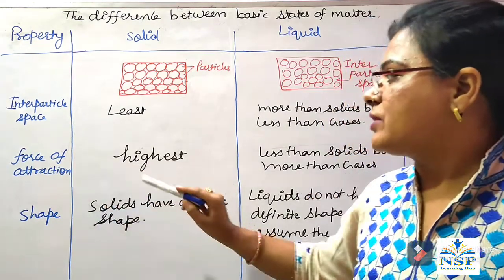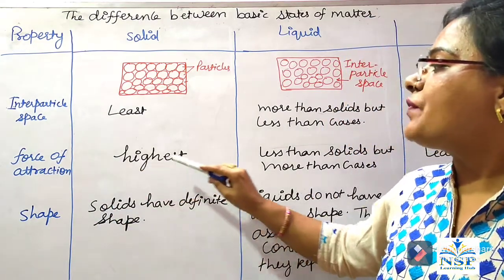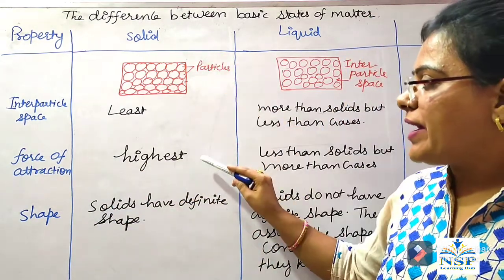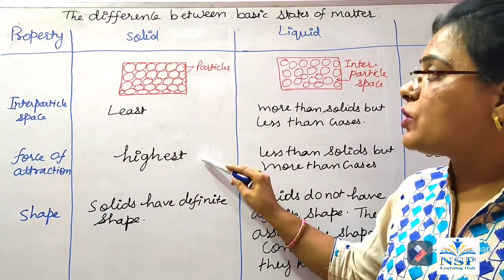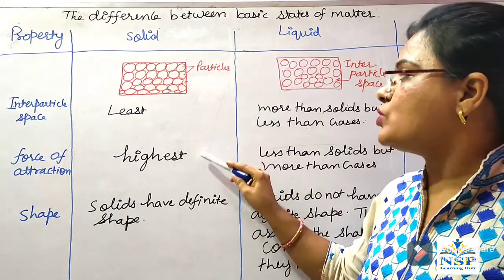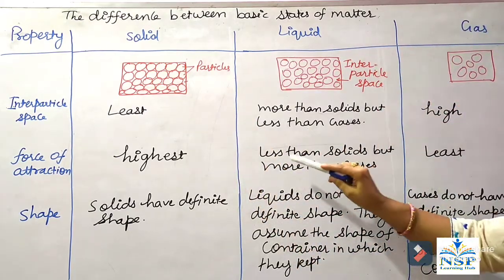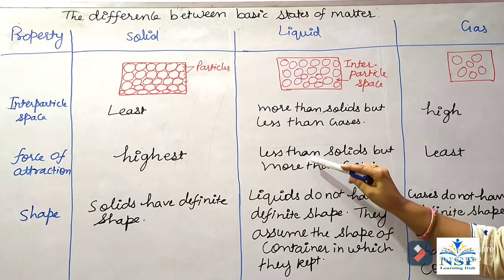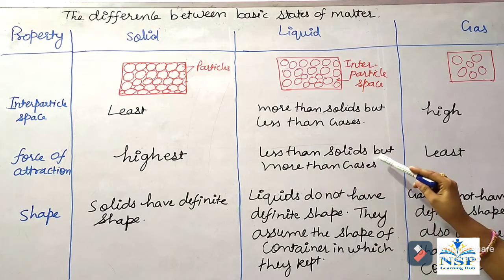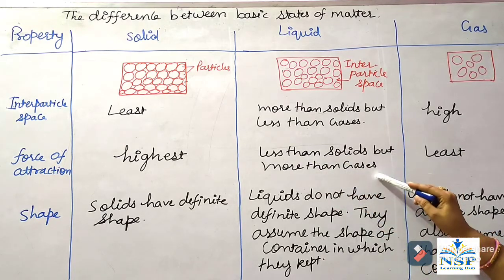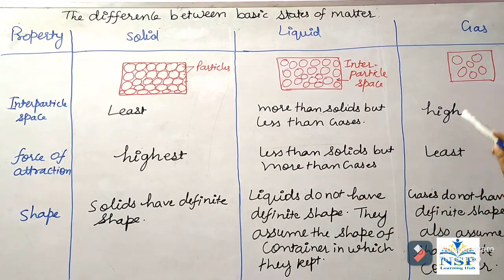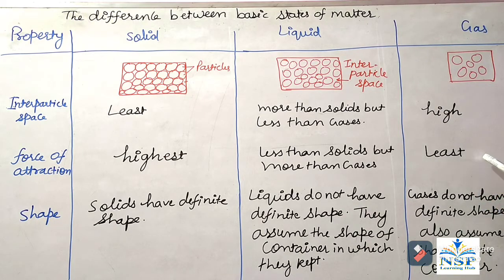Force of attraction in solid states is very highest because the particles are very close. In liquids, force of attraction is less than solids but more than gases. And in gases state, the force of attraction is least because the particles are very far away.